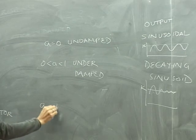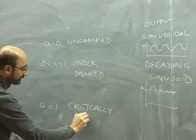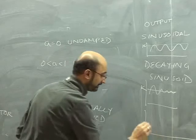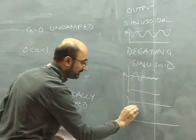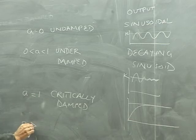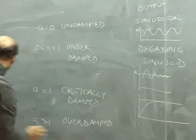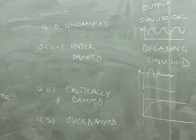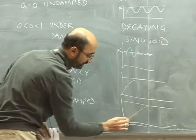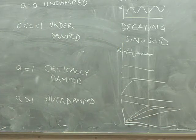When A equals 1, it's called critically damped. The system starts at 0 and asymptotically reaches the critical value - a very nice behavior. When A is greater than 1, we call it overdamped. In that case, it reaches the asymptote more and more slowly - it takes a very long time. We have this family of curves, which I'll show in a bit more detail.